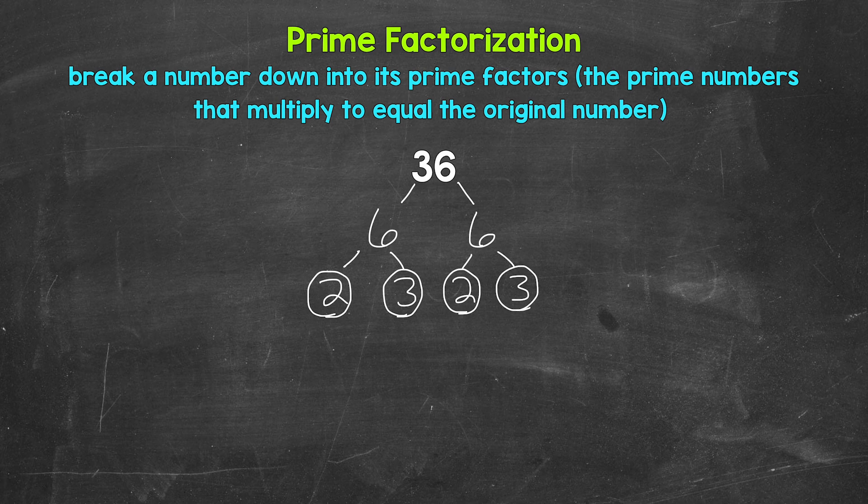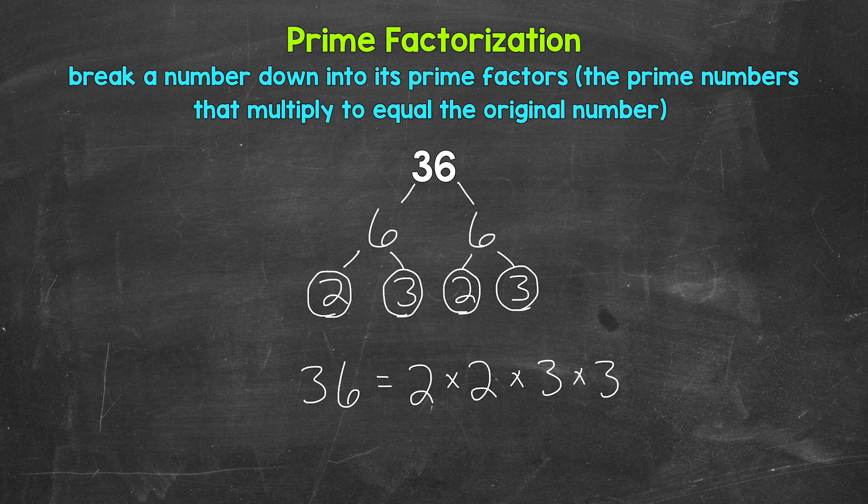That's the prime factorization of 36. So let's write this out as 36 equals. And then we can write out our prime factors in order from least to greatest. And we are multiplying them. So we have 2 times 2 times 3 times 3.